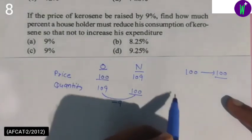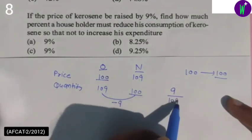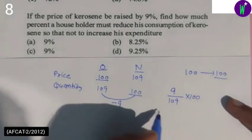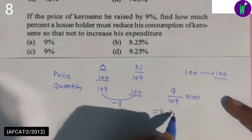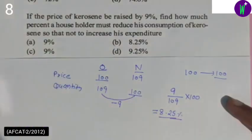Now I will find the percentage decrease. The quantity decreased by 9 units from 109 to 100. So 9 divided by 109 equals 8.25%. The answer is option B, 8.25%.